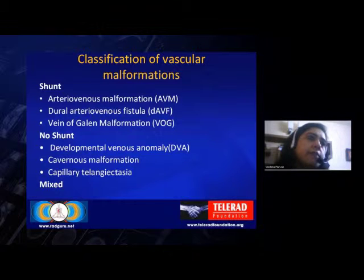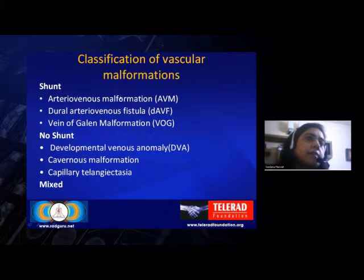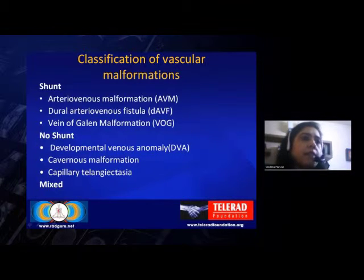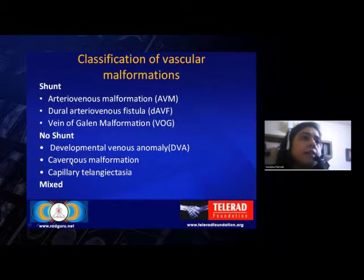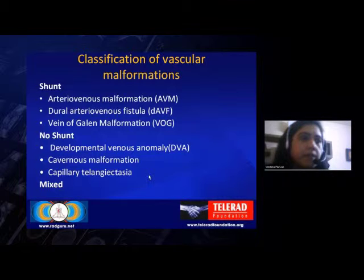Some people classify these differently based on which are shunt-forming malformations and which are not, as this is important from a treatment perspective. Arteriovenous malformations, dural arteriovenous fistulas, and vein of Galen malformations are shunt-forming. The no-shunt malformations — DVAs, cavernous malformations, and capillary telangiectasias — do not require much treatment.